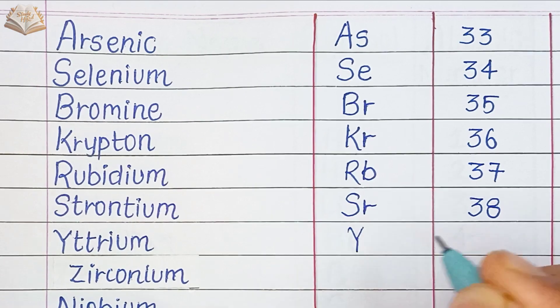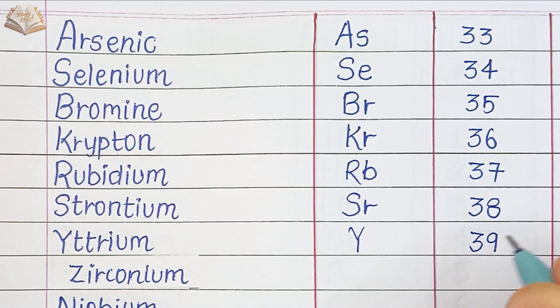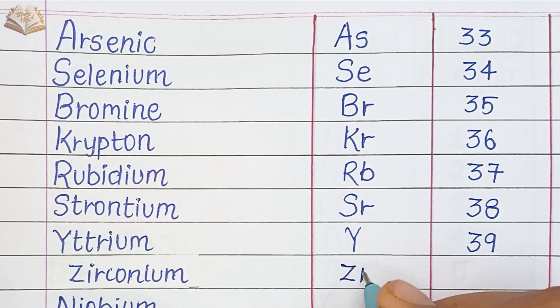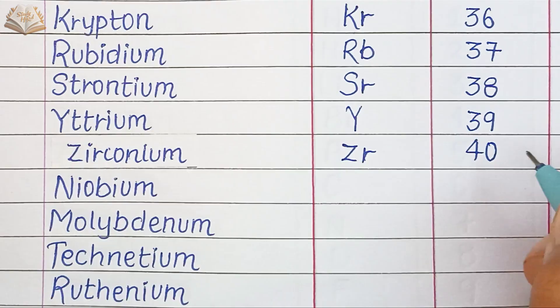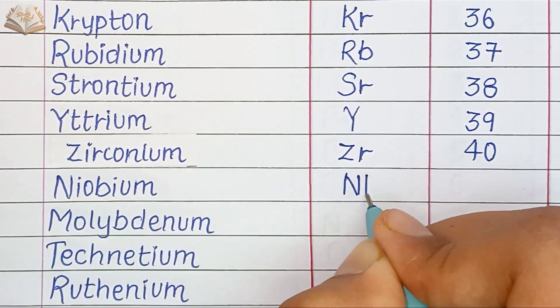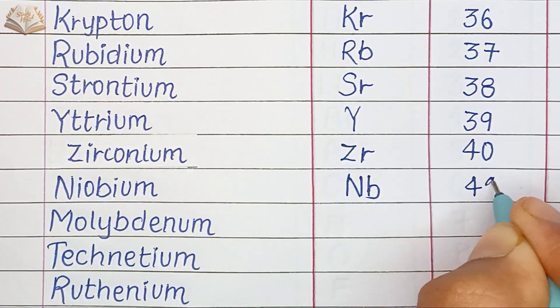Yttrium, Y, atomic number 39. Zirconium, ZR, atomic number 40. Niobium, NB, atomic number 41.